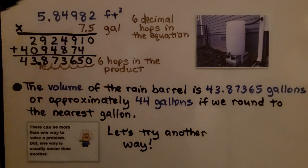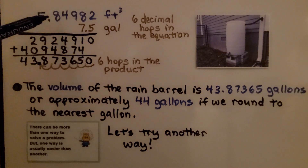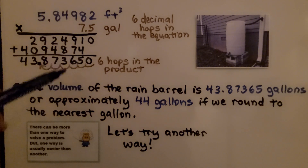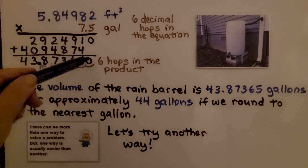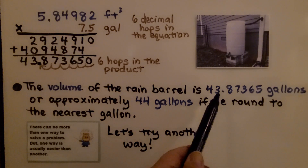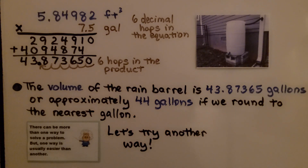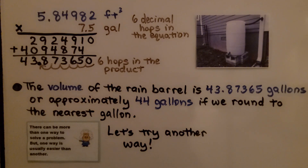We multiply them together, and there are six decimal places in the equation, so there will be six decimal places in the product. We get 43.873650. This is a trailing zero so we don't need to write it. The volume of the rain barrel is 43.87365 gallons, or approximately 44 gallons rounded to the nearest gallon. The 8 tells the 3 to round up, and everything after drops off — 44 gallons.